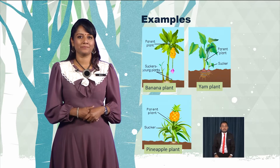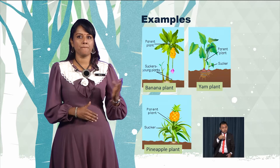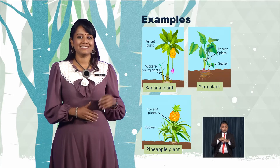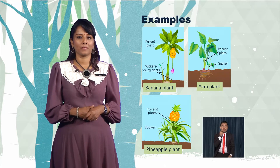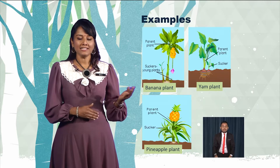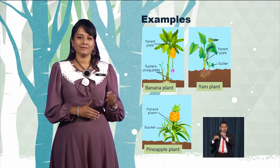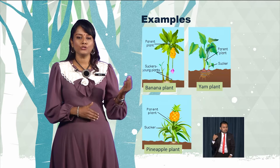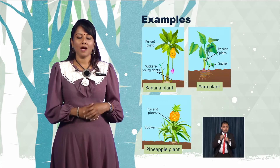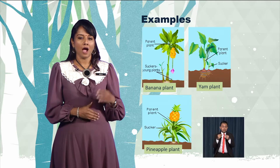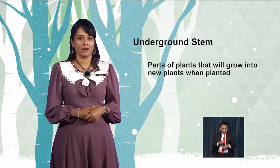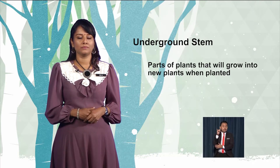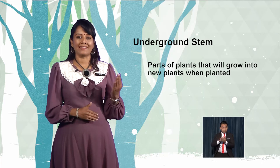Boys and girls, you have learned that plants can reproduce through seeds and suckers. Let's learn other ways plants reproduce. Some plants also reproduce through underground stems. Underground stems are part of plants that grow into new plants when planted.